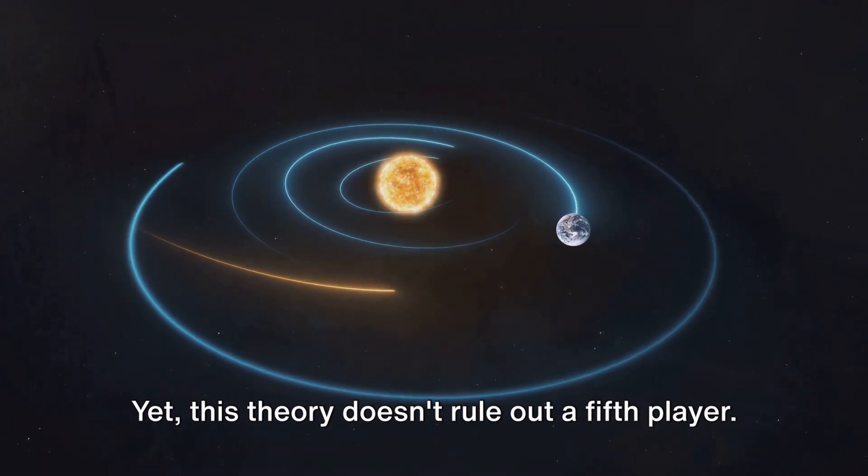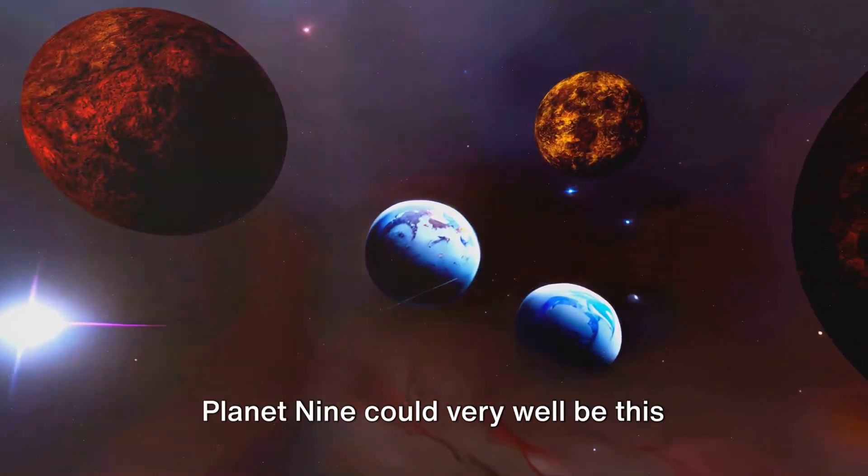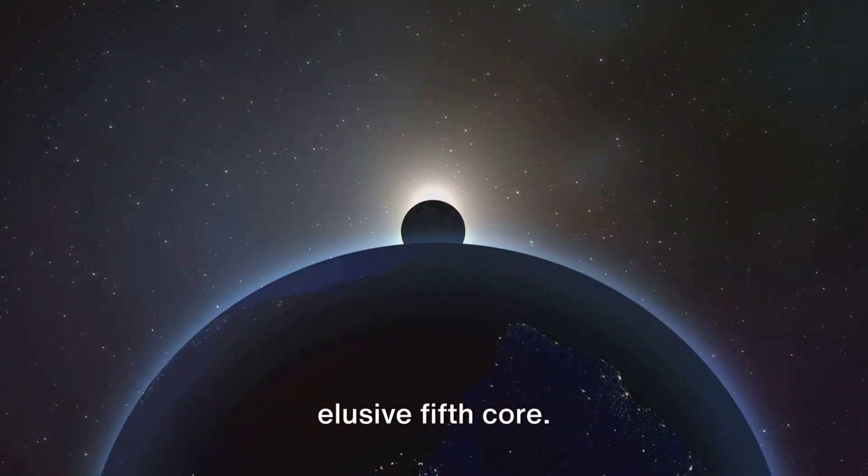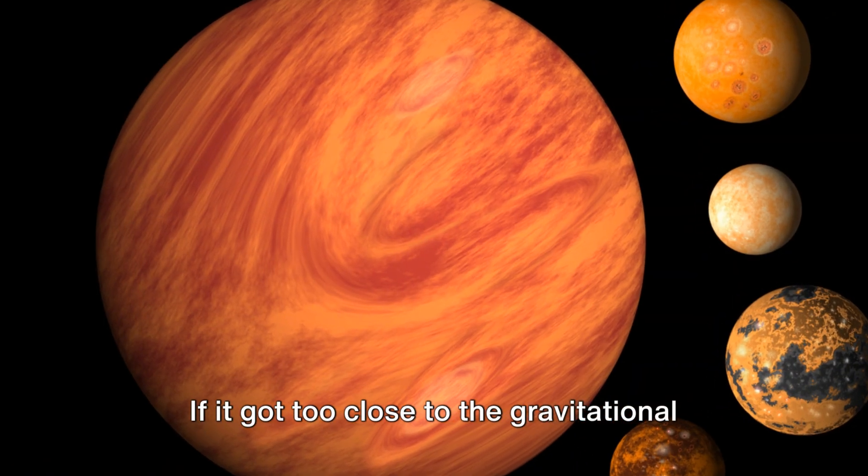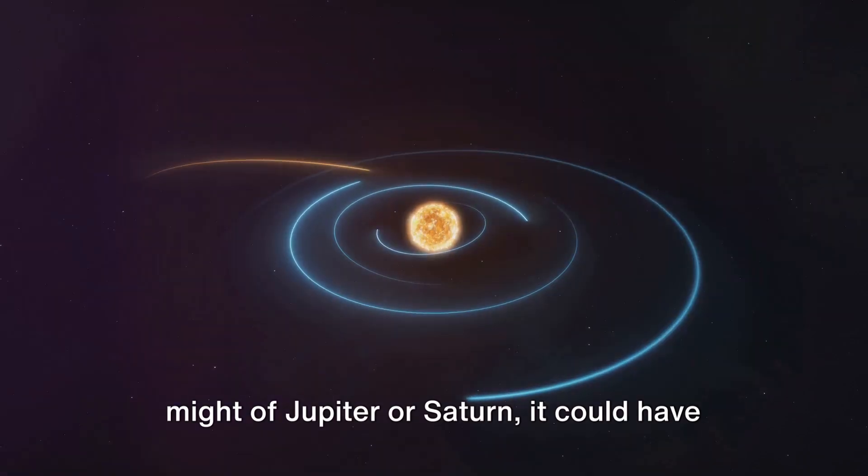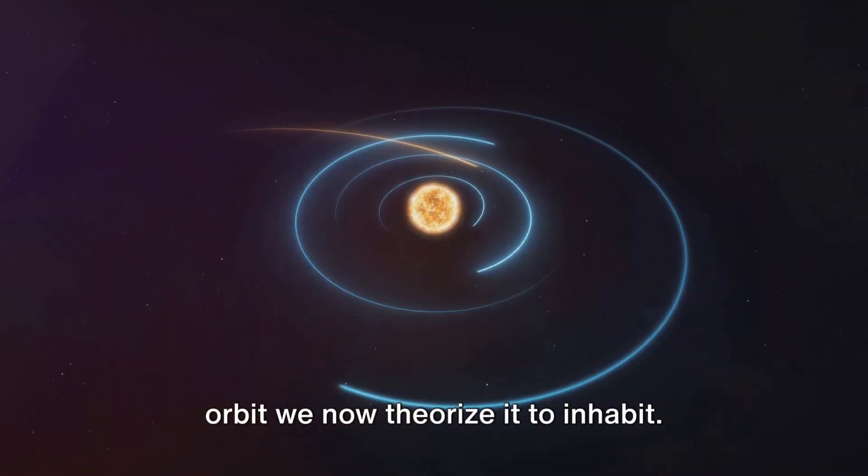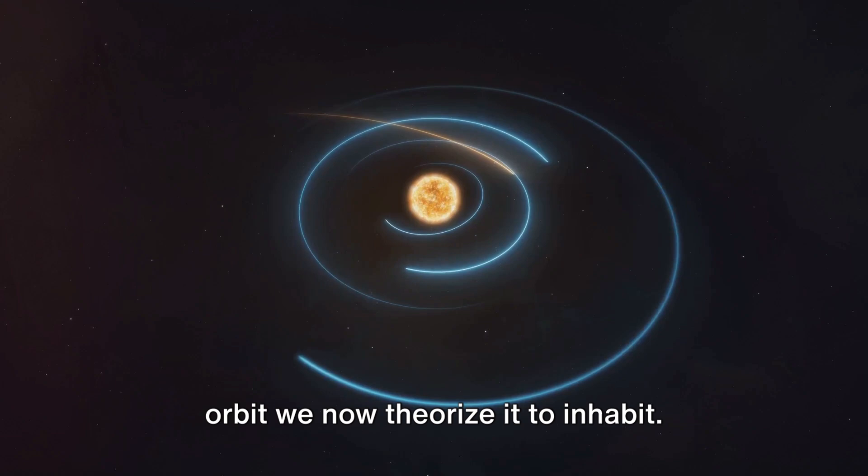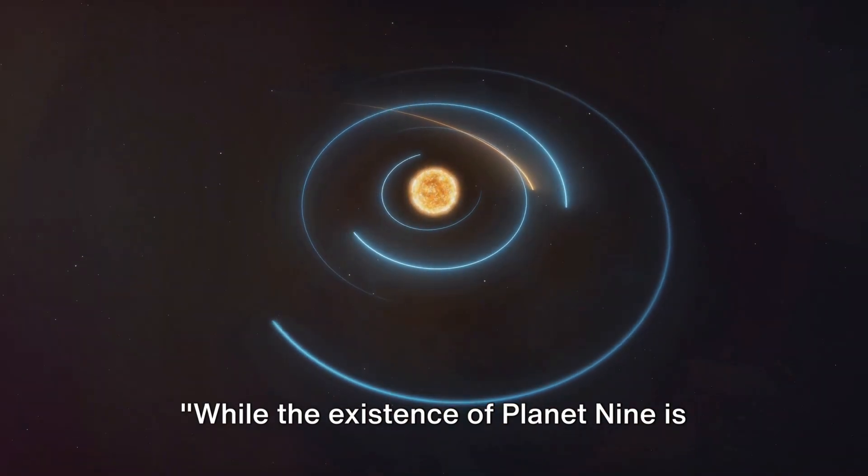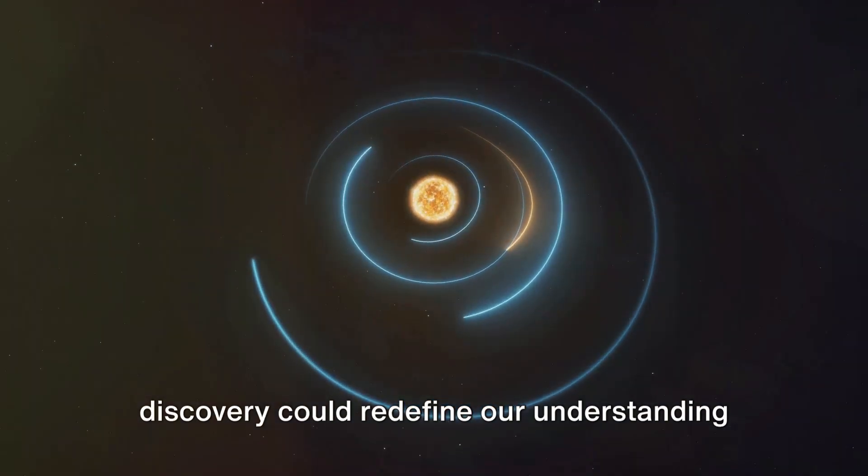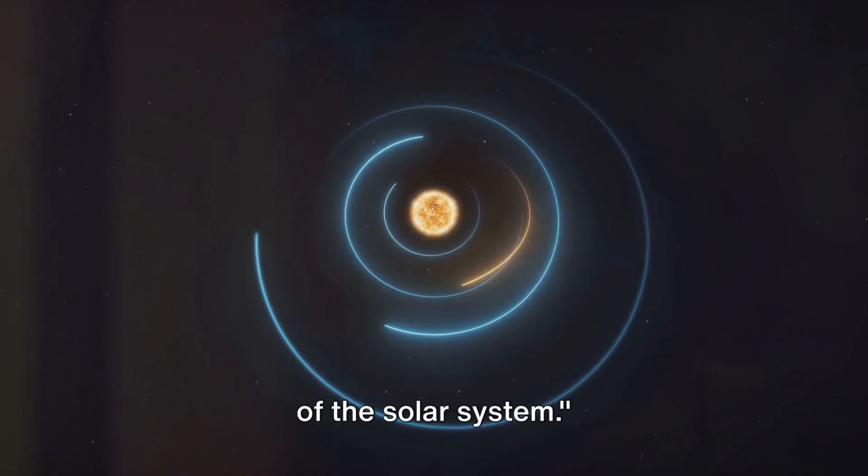Yet this theory doesn't rule out a fifth player. Yes, you heard it right. Planet Nine could very well be this elusive fifth core. If it got too close to the gravitational might of Jupiter or Saturn, it could have been hurled into the distant, eccentric orbit we now theorize it to inhabit. While the existence of Planet Nine is yet to be directly observed, its potential discovery could redefine our understanding of the solar system.